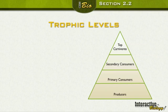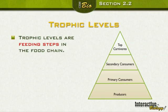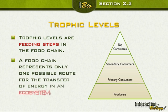Trophic levels are the feeding steps in the food chain. We're talking about the steps — from the grass, to the grasshopper, to the mouse, to the snake. We're talking about the different feeding levels, the feeding steps in the food chain.